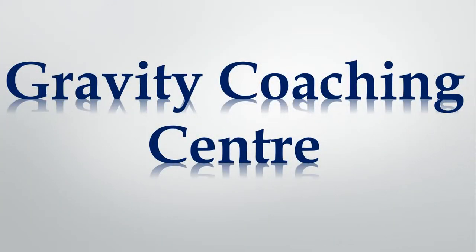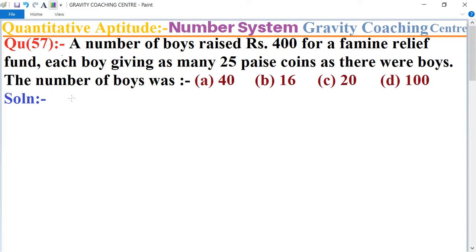Welcome to our Channel Gravity Coaching Center, Quantitative Aptitude, chapter Number System, question number 57. A number of boys raised rupees 400 for a famine relief fund, each boy giving as many 25 paise coins as there were boys. The number of boys was?